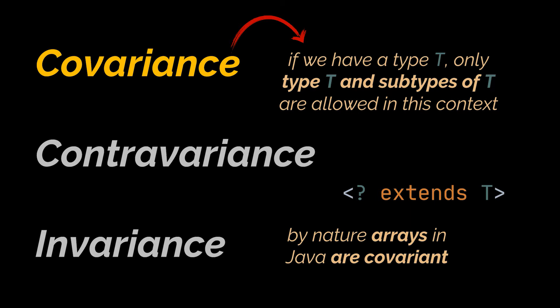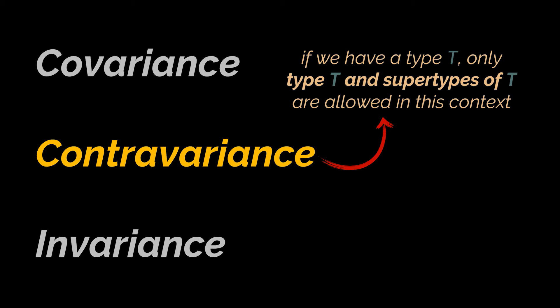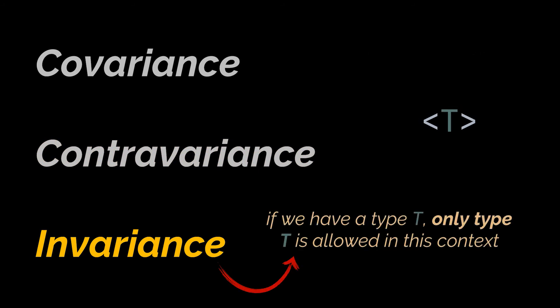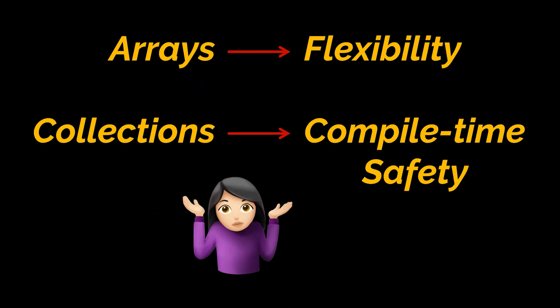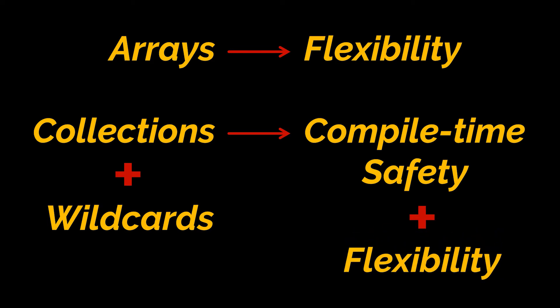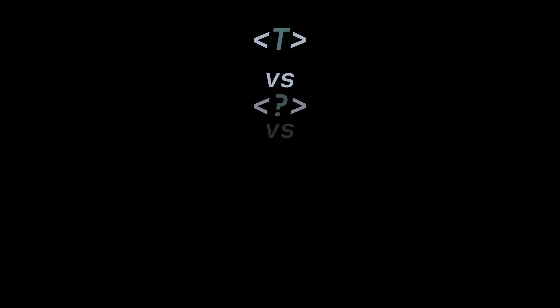Contravariance means that if we have a type T, only type T and supertypes of T are allowed in this context, represented by the lower bounded wildcard in Java. Finally, invariance means only exactly type T is allowed — no supertypes or subtypes. Arrays give more flexibility, but collections give compile-time safety. With bounded wildcards, we get both flexibility and compile-time safety.